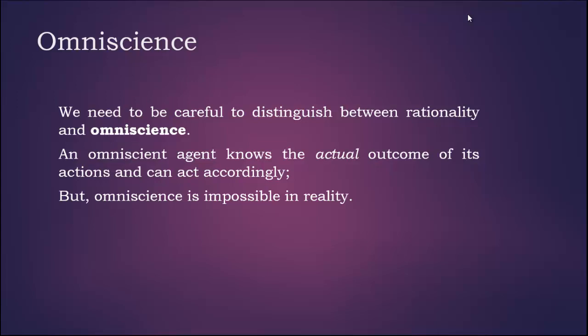Consider this example: suppose a human agent wants to cross the road. He may look left and right, and if there is no traffic, he simply crosses. But it might be possible that an asteroid is coming from the sky and is about to hit the agent. This situation should not be considered as the agent behaving irrationally.